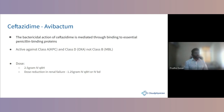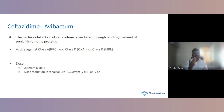Dose of ceftazidime-avibactam is 2.5 grams IV every 8 hours. In renal failure, dose reduction to 1.25 grams IV every 8 hours or adjusted to twice daily depending on creatinine clearance.